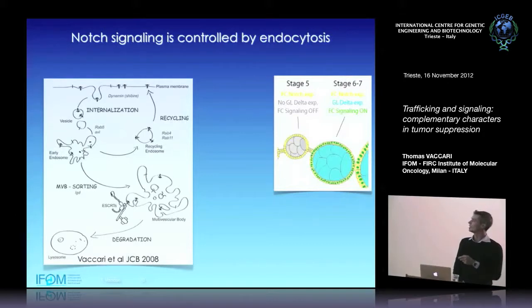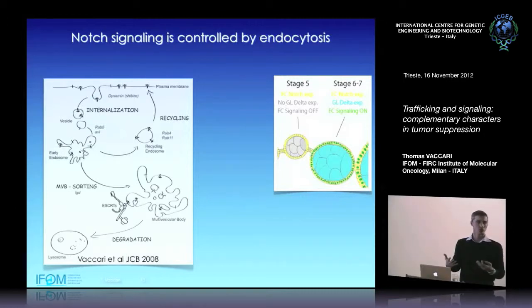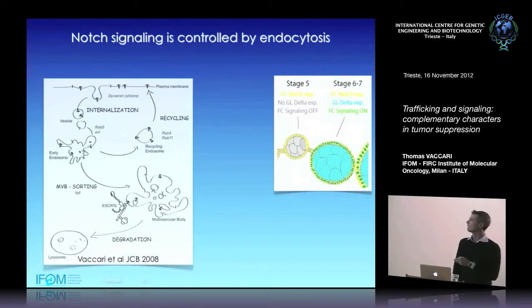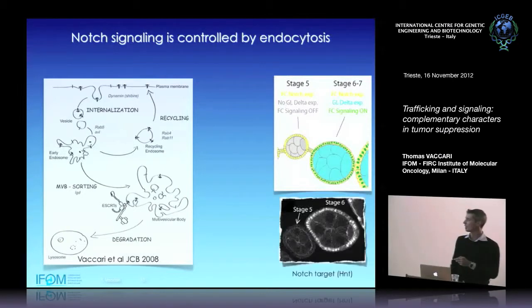We can follow activation of Notch in multiple developmental contexts in Drosophila. In a particularly useful context, we look in the ovaries of adult females, where you see different stages of development of egg chambers. The germline is covered by a follicular epithelium, and we know there is a specific Notch activation event at the transition between stage 5 and stage 6, depending on sudden ligand expression in the germline cells touching the receptor on follicle cells.